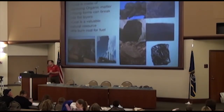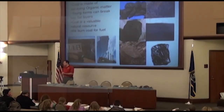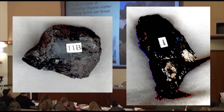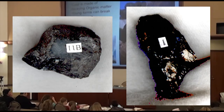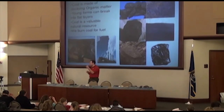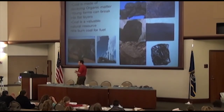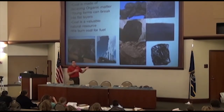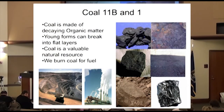Next we're going to talk about coal — grab 11B and sample 1 out of your egg crate. Coal is made from decaying organic matter — stuff that used to be living. The younger forms often break into layers. With more heat, pressure, and age, it breaks less into those flat layers. It's a valuable resource — a fossil fuel we burn as fuel. This is the progression of coal: it starts out as peat, which is basically broken pieces of wood and leaves you might find in a swamp or bog. As that gets pressed down, the first form of coal is called lignite, usually a brown color, which starts to break into layers and be more like a rock.